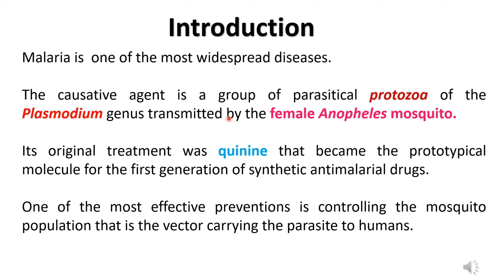Malaria is one of the most widespread diseases. The causative agent for malaria is the protozoa of the plasmodium genus. This malaria parasite is transferred by the female Anopheles mosquito, which acts as a host carrying the plasmodium protozoa. The basic treatment used for malaria is quinine, which was the first drug introduced and the first generation of synthetic anti-malarial drug. The best way to control malaria is to control the malaria vector — the mosquito population.